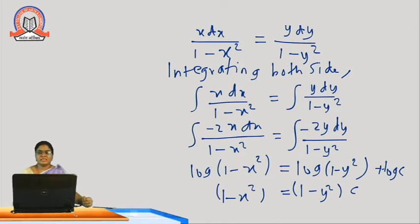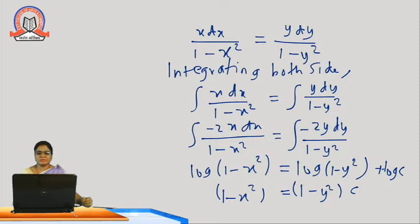Gathering x on the left side and y on the right side, the multiplication terms move to division. Integrating both sides, we get integral of x dx upon (1 minus x²) equal to integral of y dy upon (1 minus y²). Using substitution method, taking t equal to 1 minus x², we get: log(1 minus x²) equal to log(1 minus y²) plus log c.